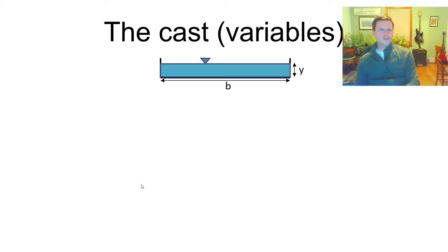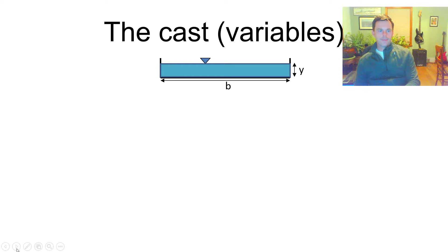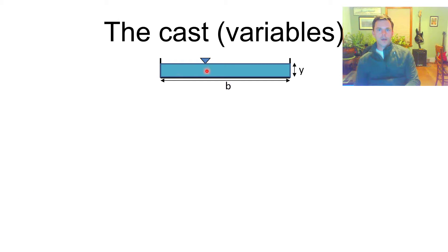Let me introduce you to the cast of variables that are starring in this open channel flow. For a lot of this unit, we're going to be thinking about rectangular channels. Obviously a river or a more natural stream has a very different geometry than the rectangular one I'm showing you here. If it's rectangular, we are going to call the width B and the depth will be Y.